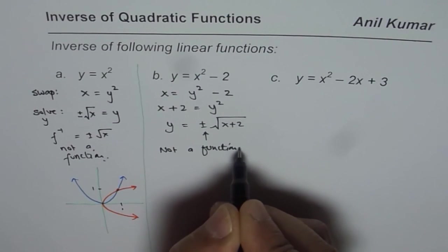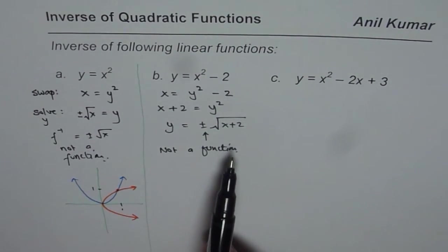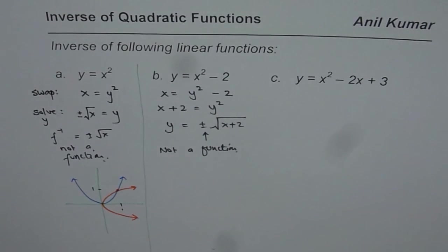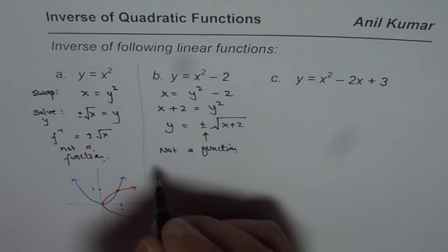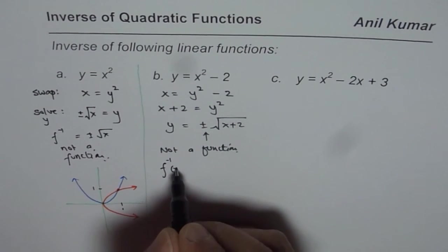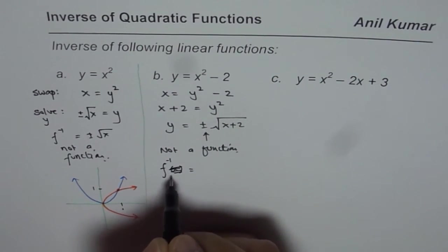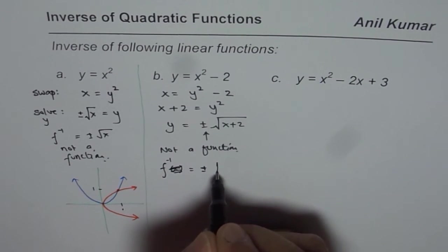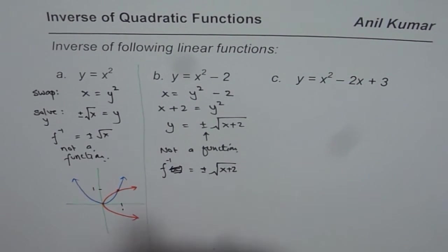At times you may be asked to restrict the function itself to ensure that the inverse is a function — we will take that up in another video. For now, f-inverse equals plus or minus square root of x plus 2. That is how you handle this kind of equation.